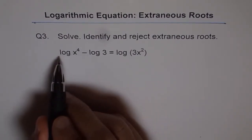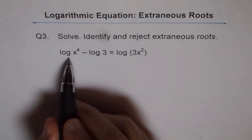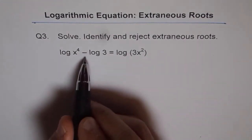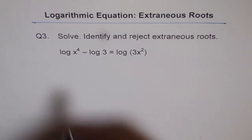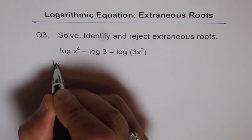So let's check them out. So we have this equation here: log of x to the power of 4 minus log of 3 equals to log of 3x squared. So let's bring them to one side and try to solve them.